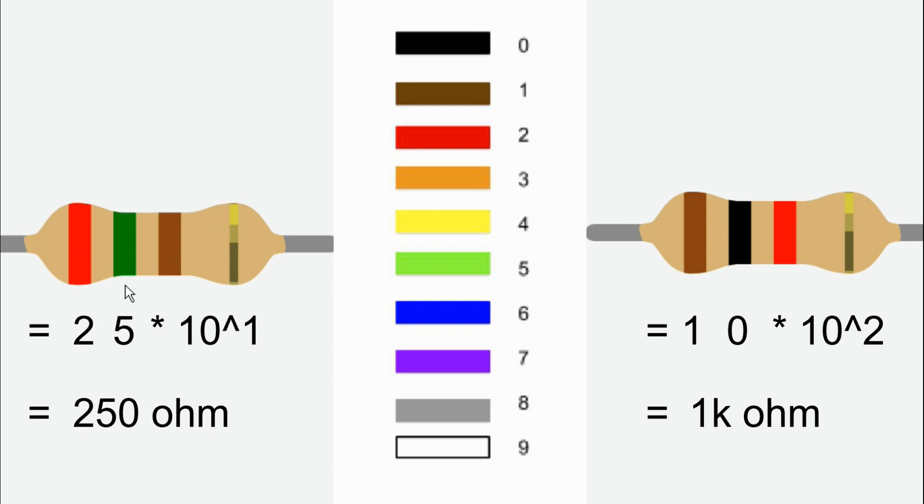There is a band - the third band is the multiplier band. If you have a multiplier band, it will go into 10 power. Here is 2, here is 5, and the third band multiplier so we get 250. That is the resistor value. So it is very easy.